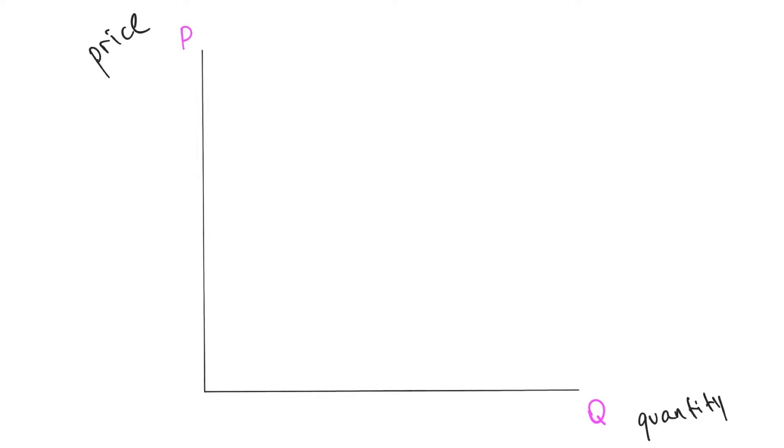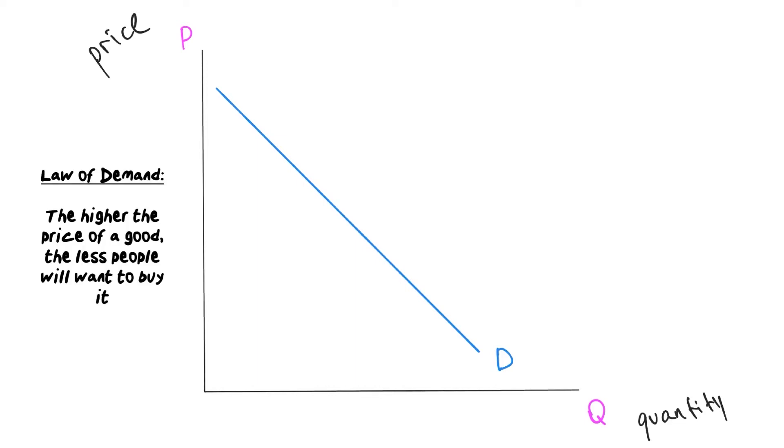So, the demand curve has a downward slope and the law of demand states that the higher the price of a good, the less people will want to buy it. This makes sense. The more expensive something is, the less of it people will want. And likewise, the cheaper something becomes, the more of it people will buy.